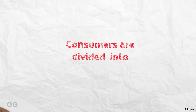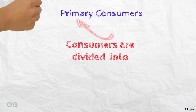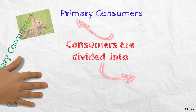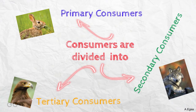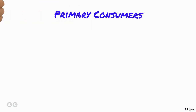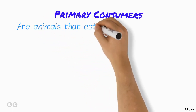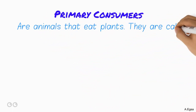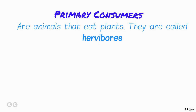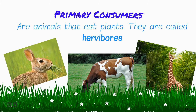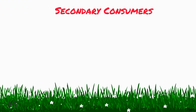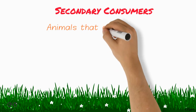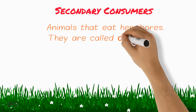Consumers are divided into primary, secondary, and tertiary consumers. Primary consumers are animals that eat plants; they are called herbivores. Secondary consumers are animals that eat herbivores; they are called carnivores.